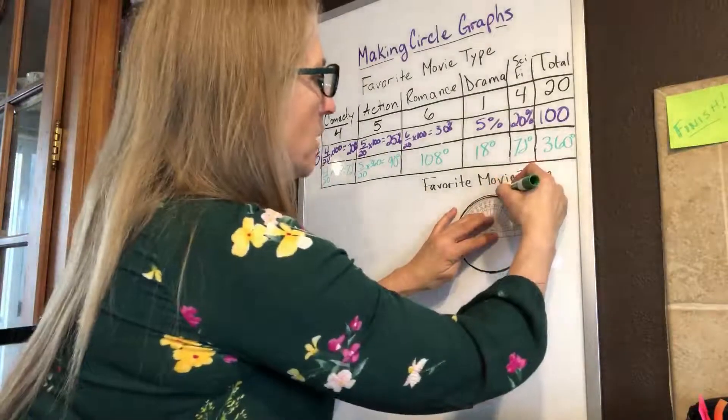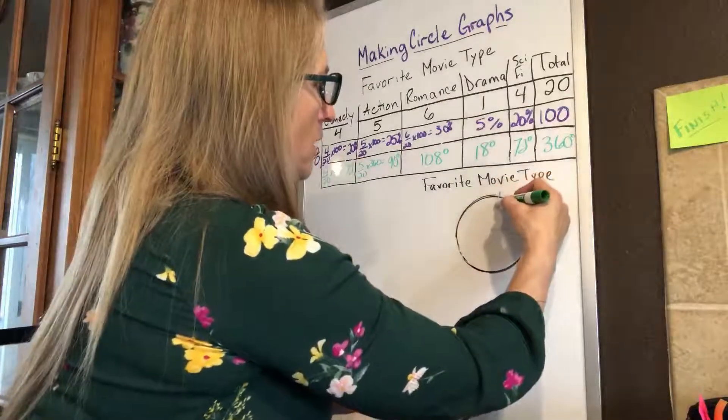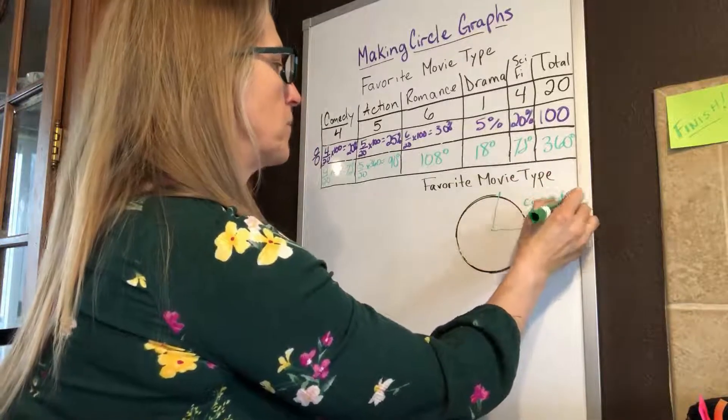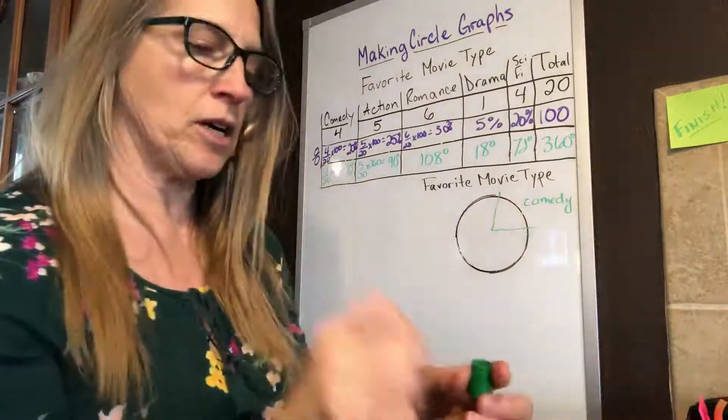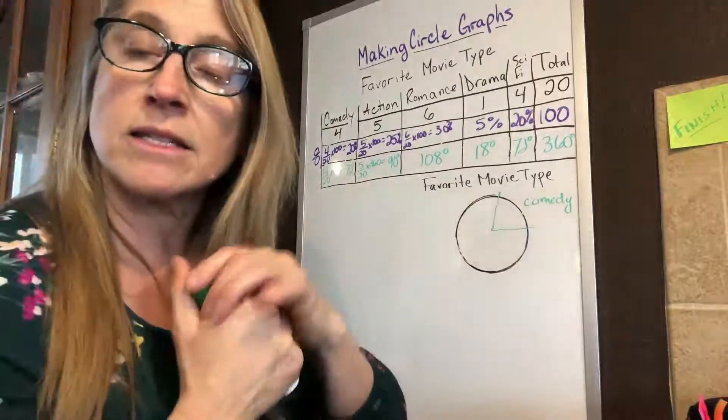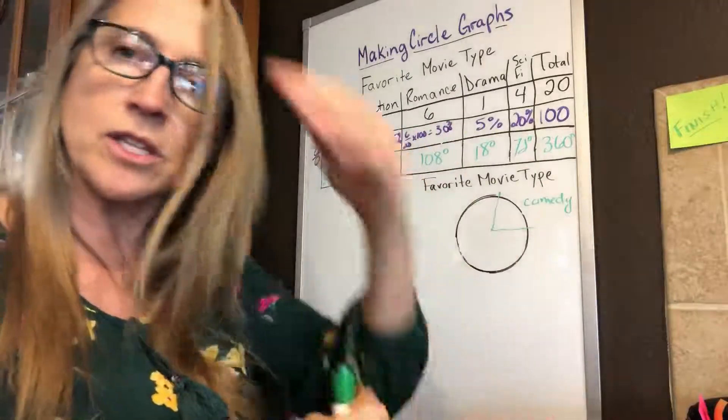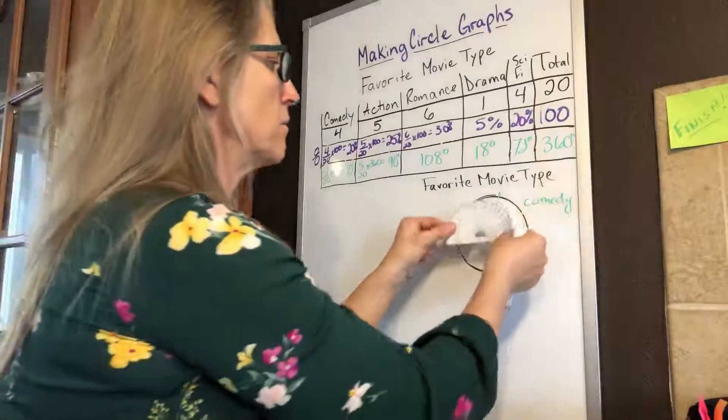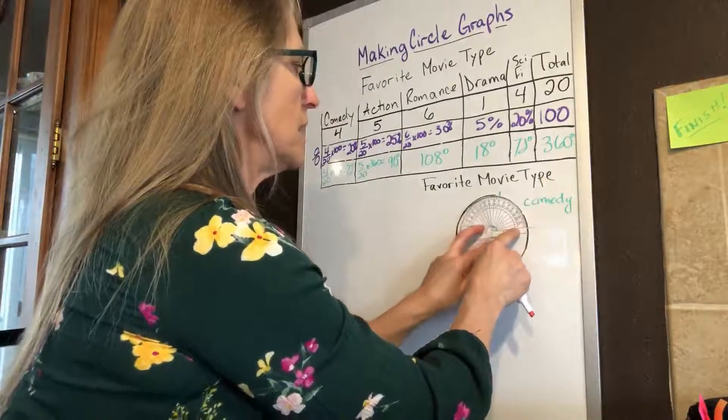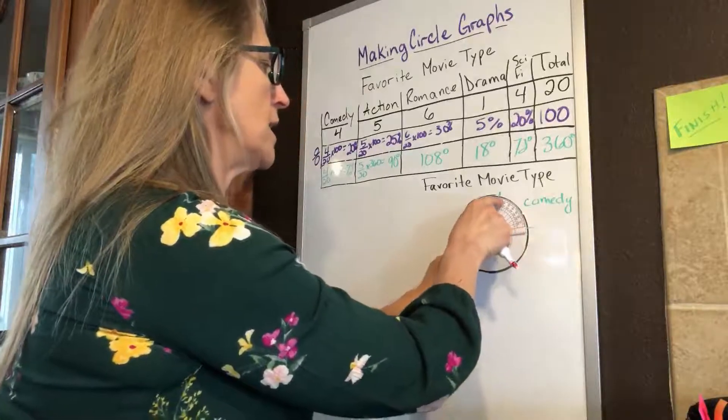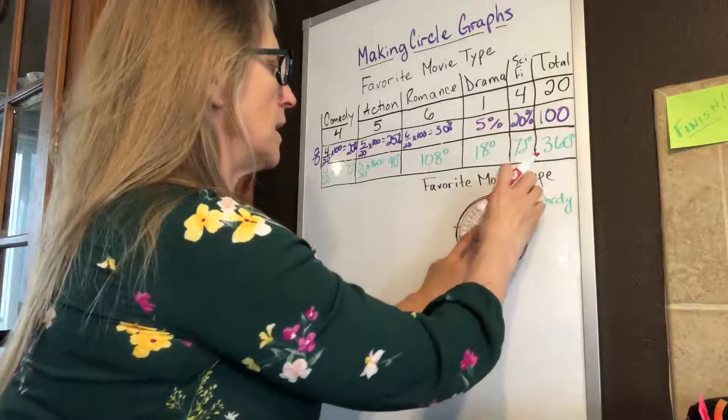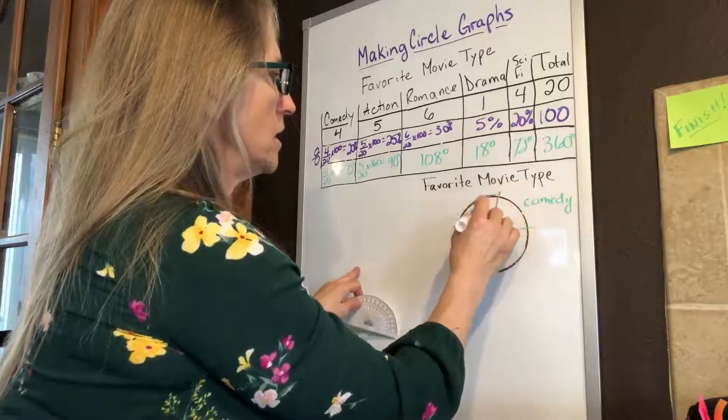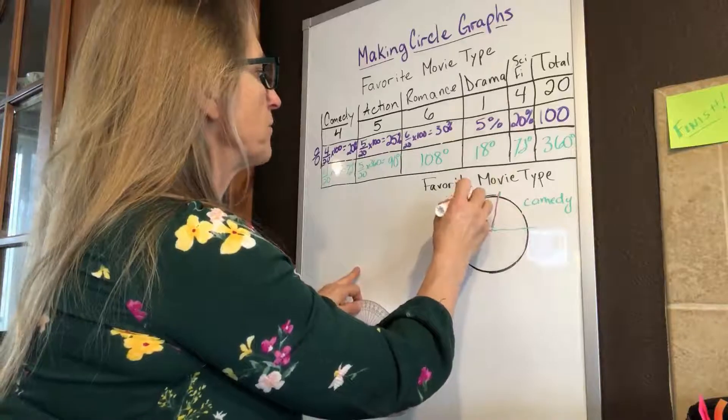It's right about there, roughly. So I draw my line, and that particular one is comedy. Then I'm going to draw my next one. My next one is 90 degrees. I can take 72 and add 90 to it, which gives me 162, right? And I can make my next mark. So I'm going to go from my 72, I'm going to add 90 to that over to 162. And that from here to here is going to be my action.